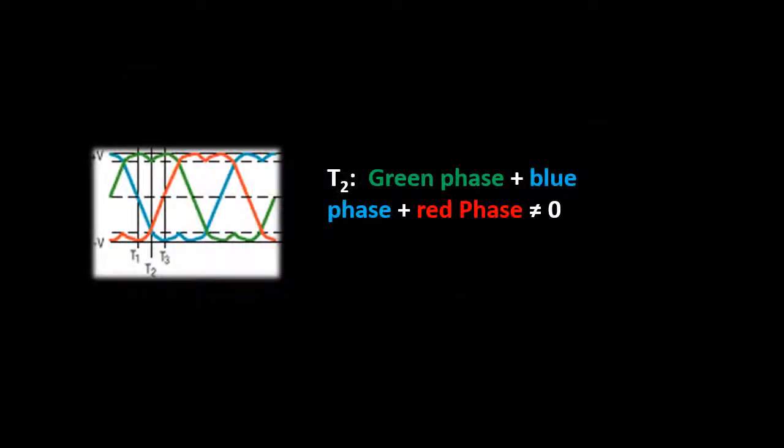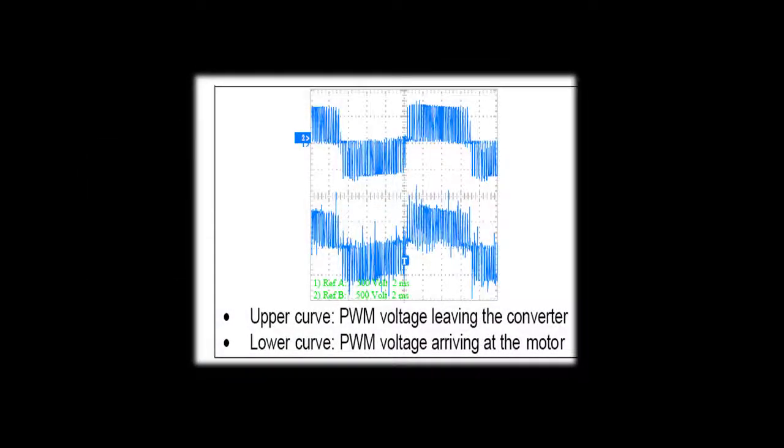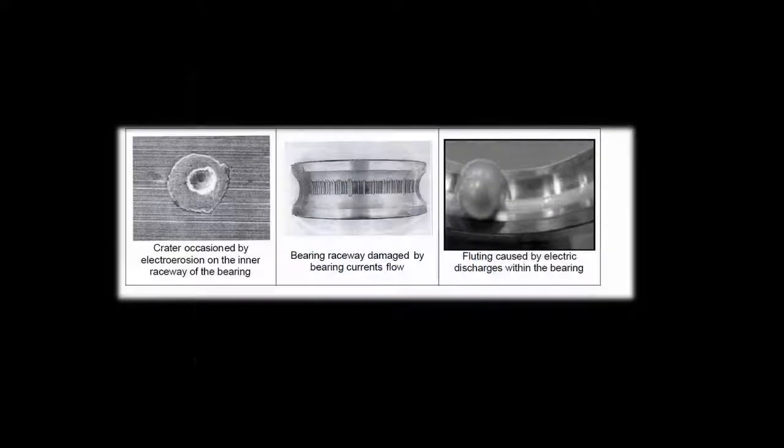Non-sinusoidal switching patterns, such as space vector modulation, as well as transient spikes, can also contribute to this induced voltage on the rotor. This voltage is referred to as the common mode voltage, and leaks to earth through the rotor bearings, causing damage in the process.